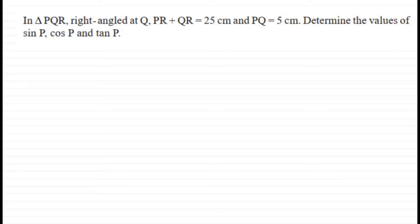To solve this question, let's first draw a right-angled triangle. It is right-angled at Q, so this is Q. Now label the other vertices as P and R.